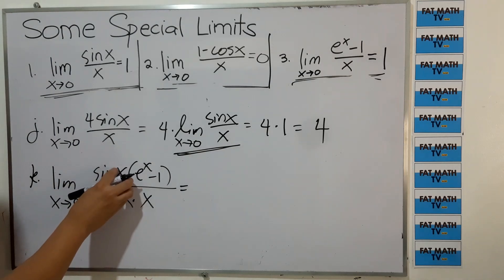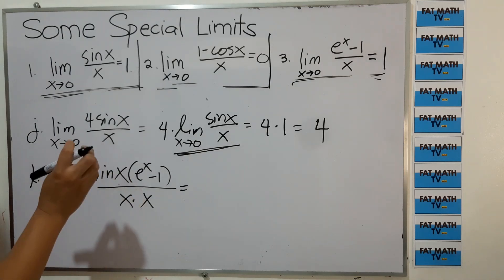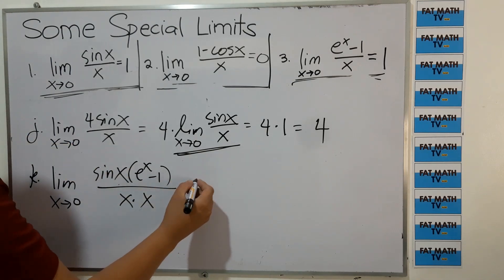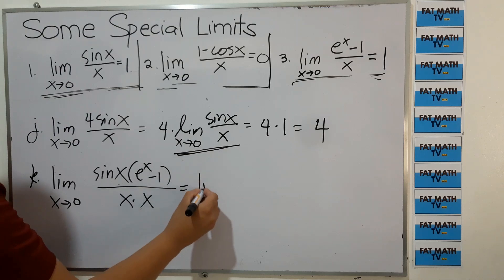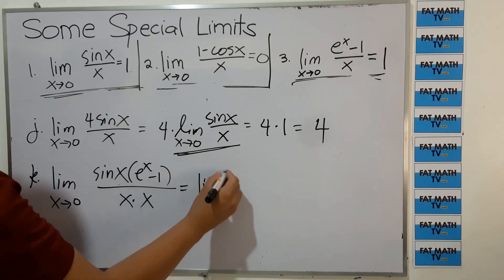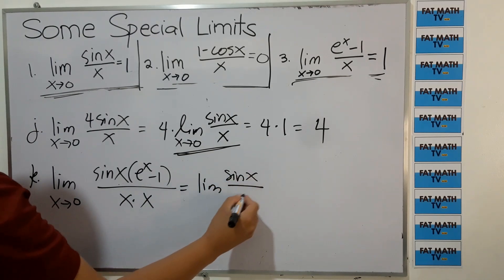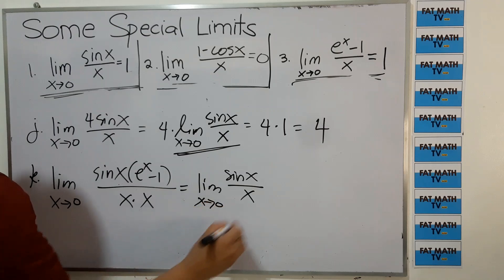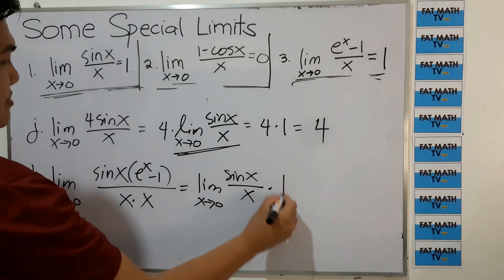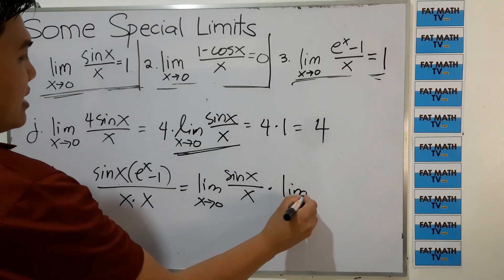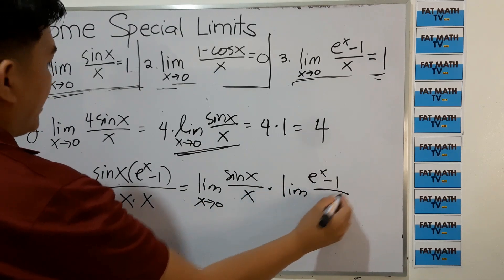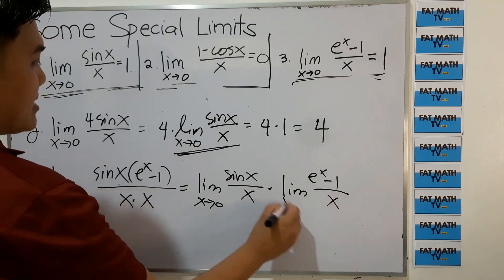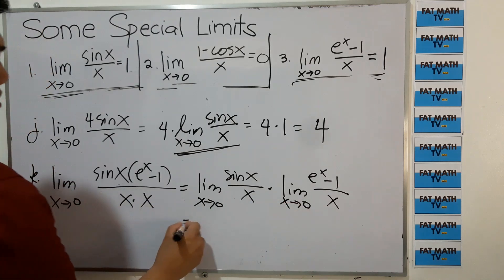The limit of the product can be expressed as the product of the limits. So this can be written as the limit of sin x over x as x approaches 0, times the limit of e raised to x minus 1 over x as x approaches 0.